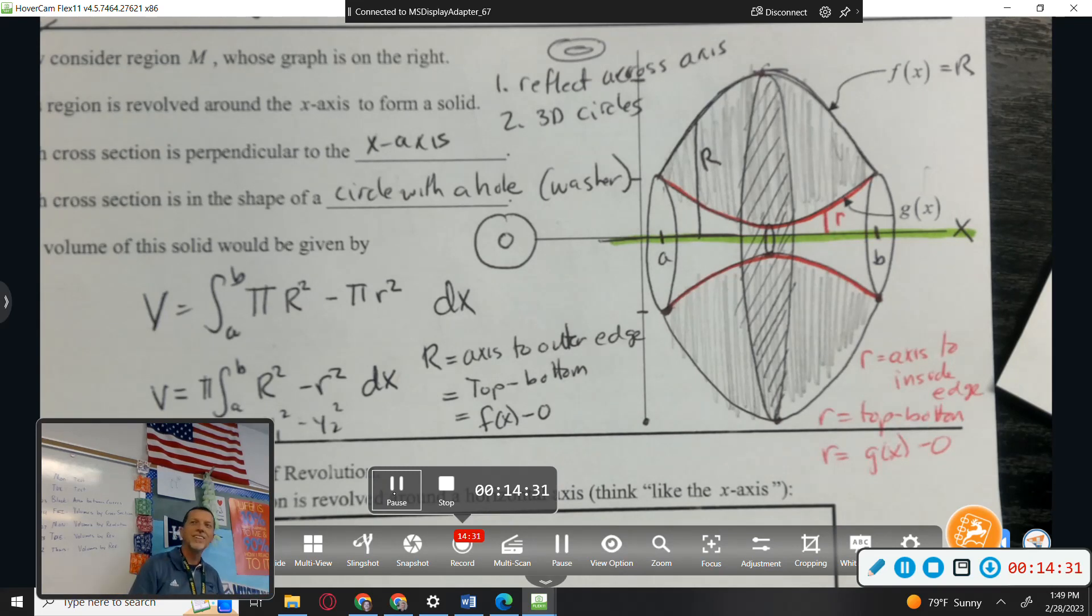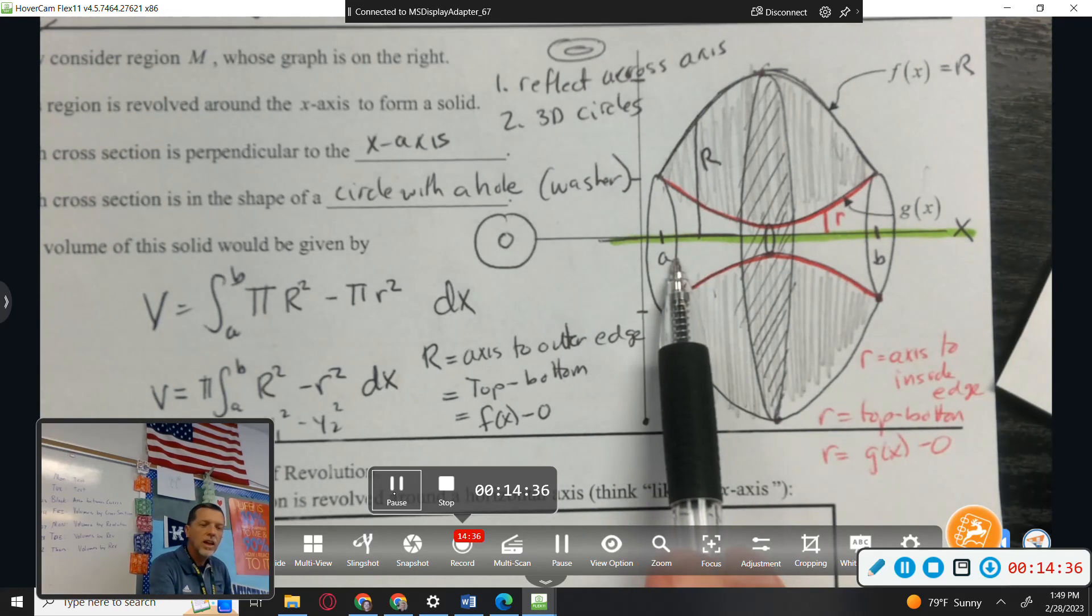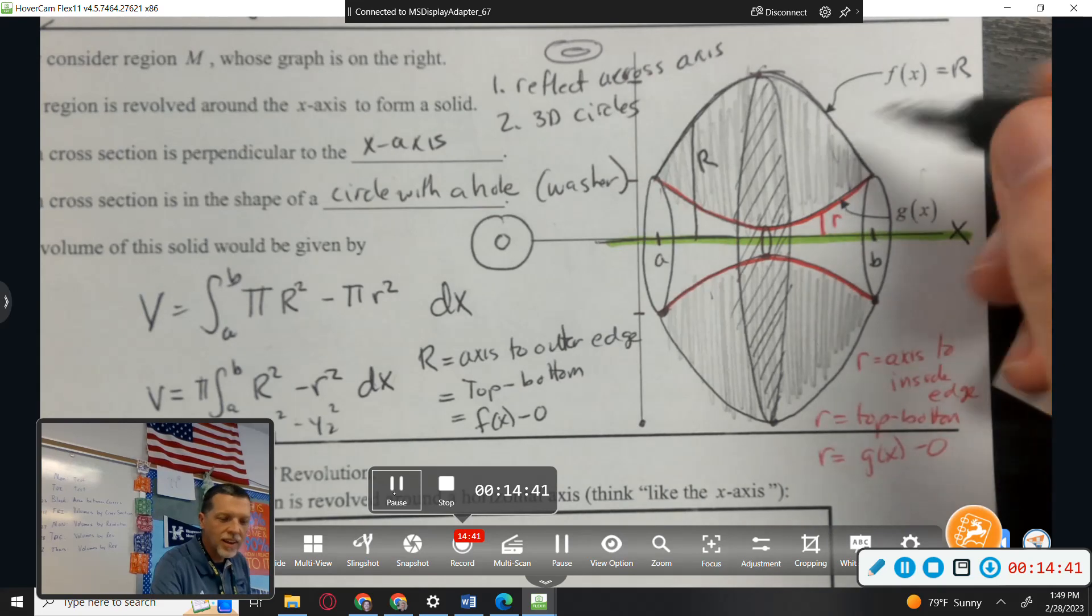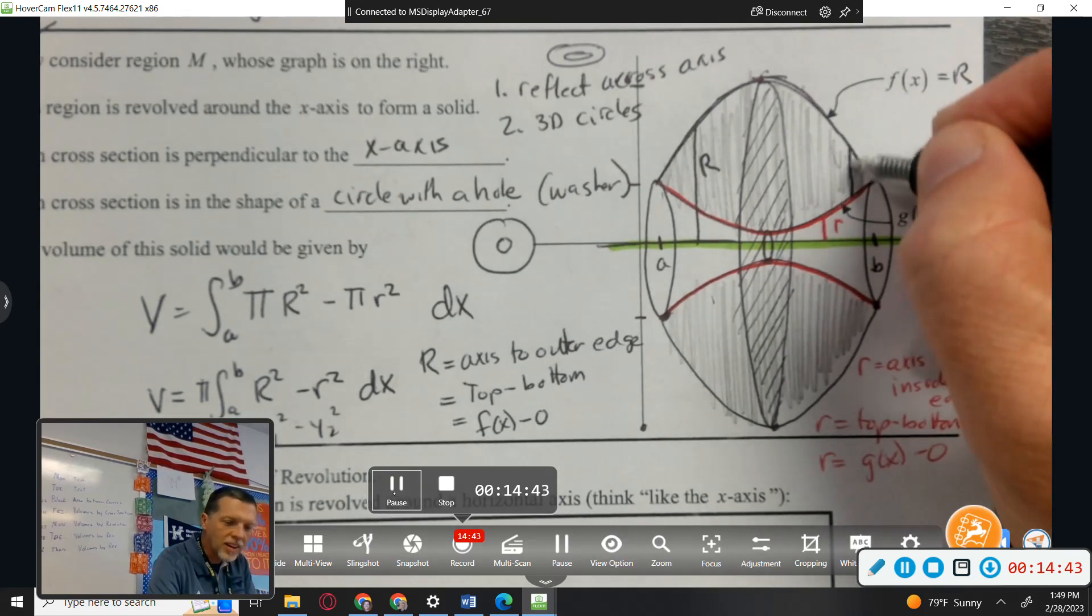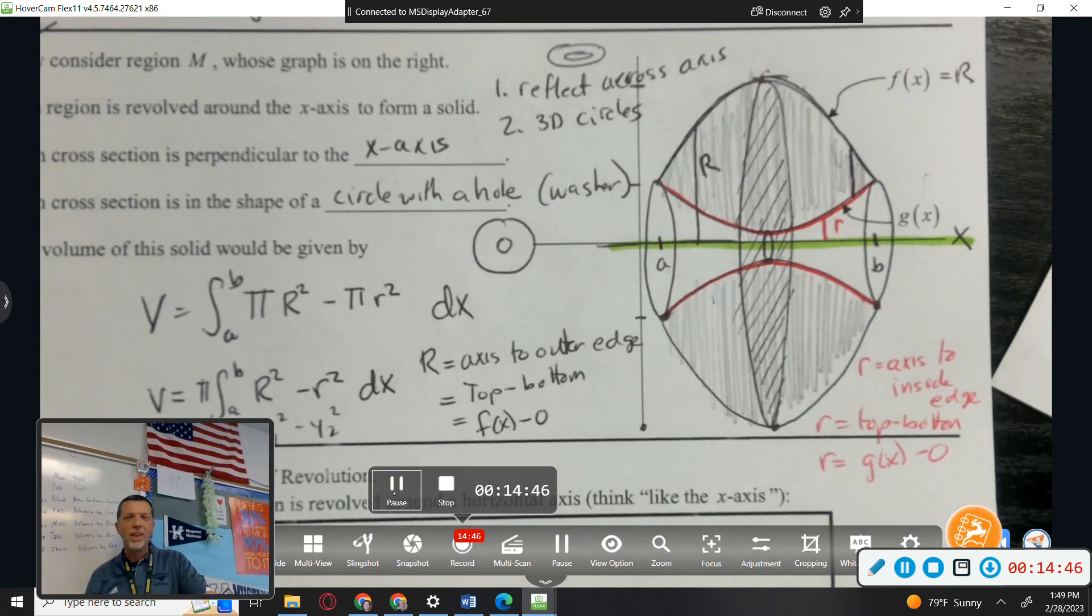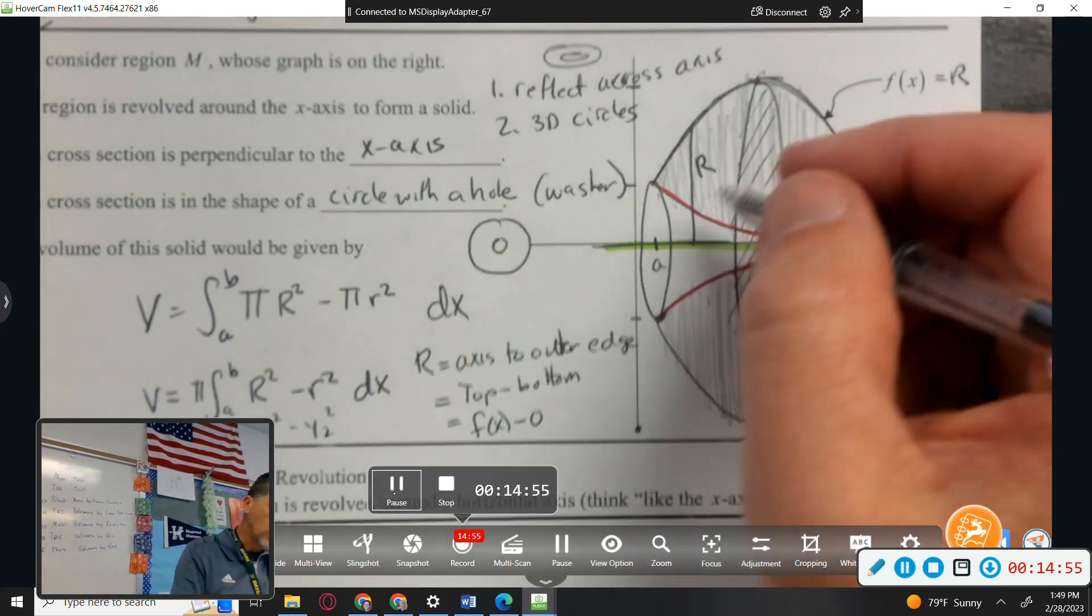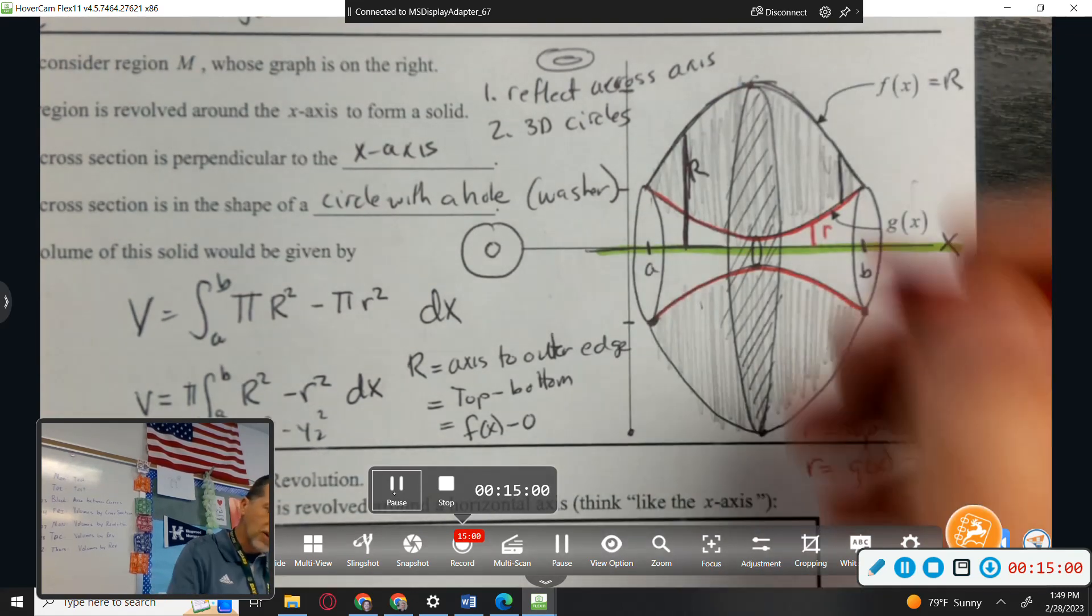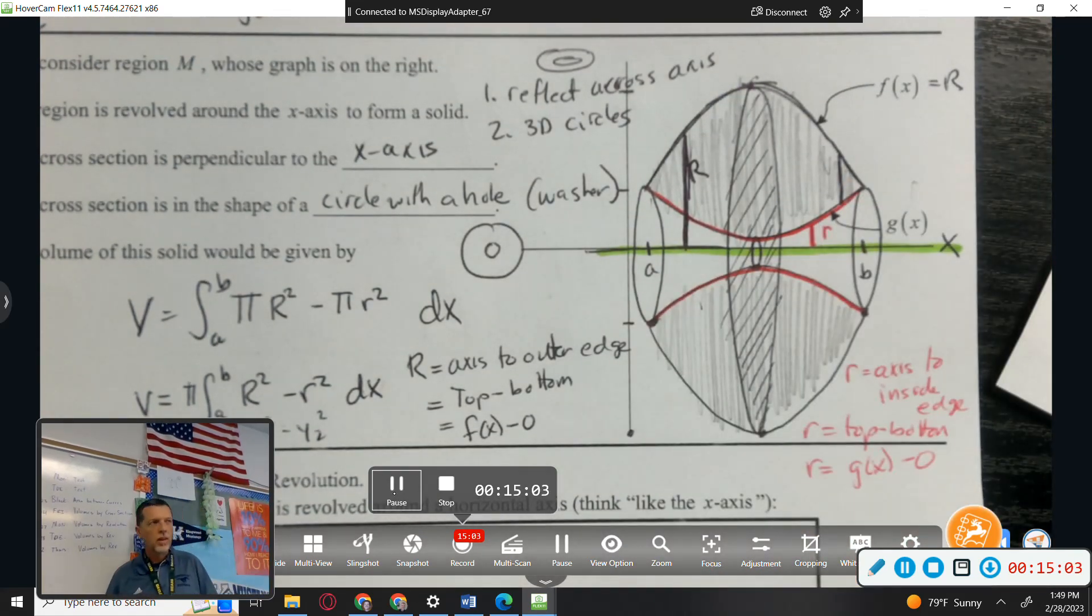Why is it F of x minus 0? Shouldn't it be G of x? That's a good question. That would be F minus G, that would be the whole distance. That would be good for finding the area, but I want to find the area of that circle, so I need R, meaning this whole thing, and then I need little r, meaning this little piece.